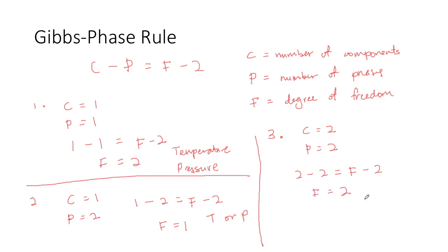Thus for a two component, two phase system, two properties, temperature and pressure, need to be fixed before the system can be at a constant state.